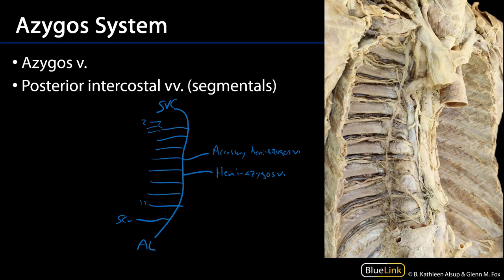We can only see the right side here, so let me trace this for you. Here's the arch of the azygos vein, descending all the way down. And here are those posterior intercostal veins on the right side draining into the azygos vein, as we can see.